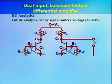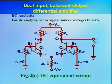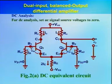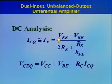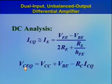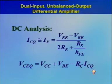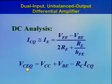The operating point consists of collector current and collector-to-emitter voltage. They are given by: ICQ equal to IE equal to (VEE minus VBE) divided by (2RE plus RS divided by HFE). VCEQ equal to VCC plus VBE minus RC·ICQ. The derivations of ICQ and VCEQ are the same as that of dual input balanced output differential amplifier.